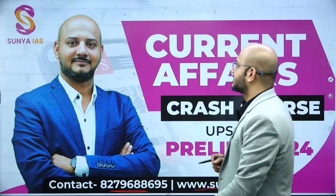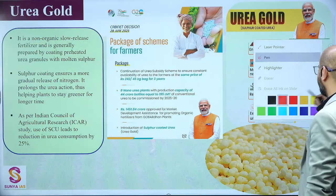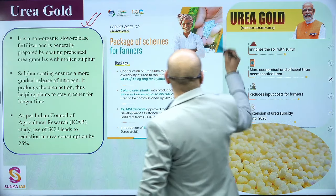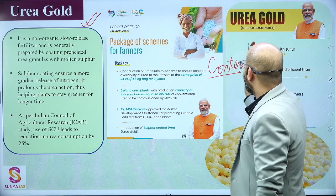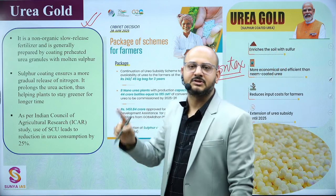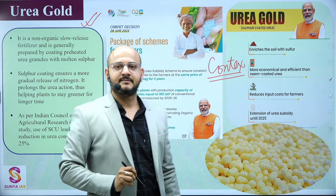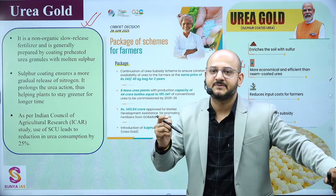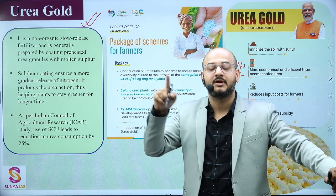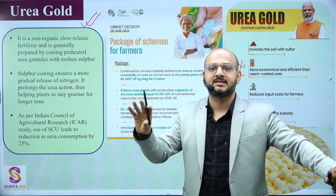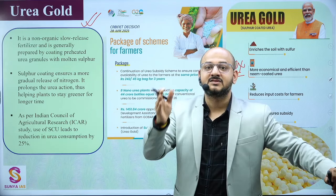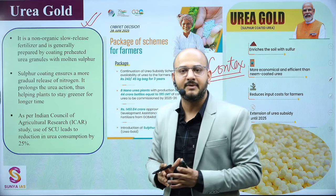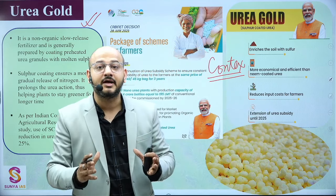Without further ado, let's start. The first topic is Urea Gold. Why are we talking about Urea Gold? The context is that whether it be mains or prelims, the most important topic is subsidy — agricultural subsidies: food, fuel, and fertilizer. These three types of subsidies have a very high budgetary outlay and we want to rationalize them.